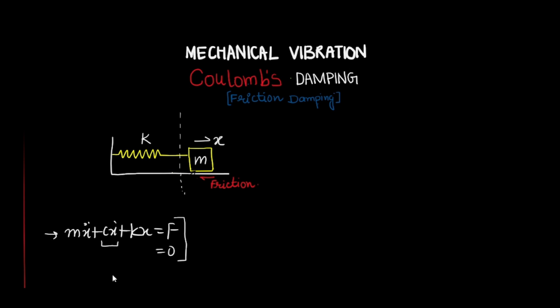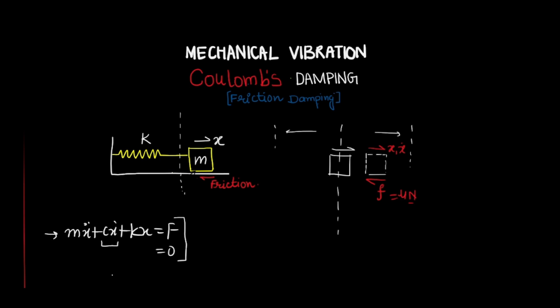It is not possible to write a single equation with one sign convention to define the entire motion, because when the mass moves from left to right the friction direction is opposite, and when it moves from right to left the direction is different. Consider case one: the mass is moving away from the mean position toward the right. The friction force acts opposite to the direction of motion, and the spring force acts back toward the mean position.